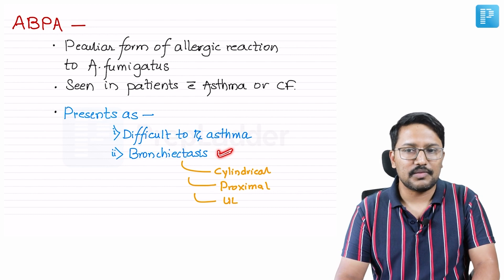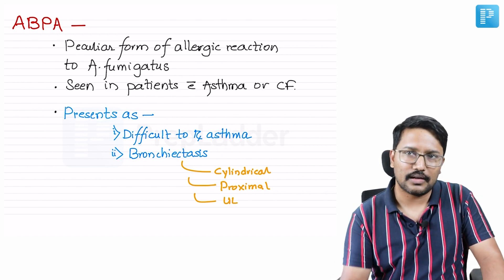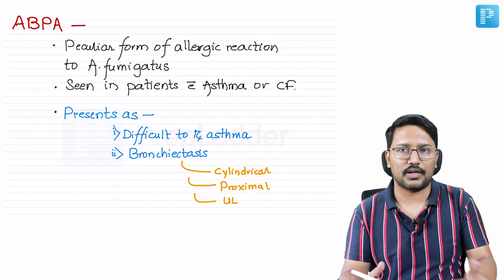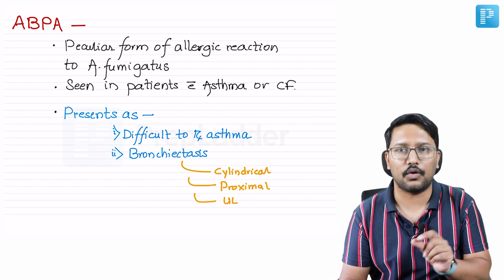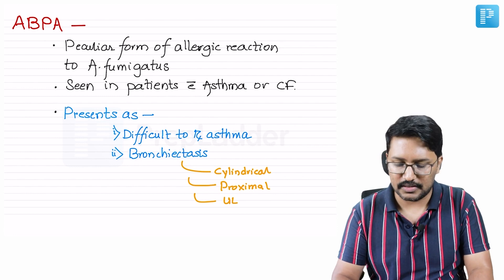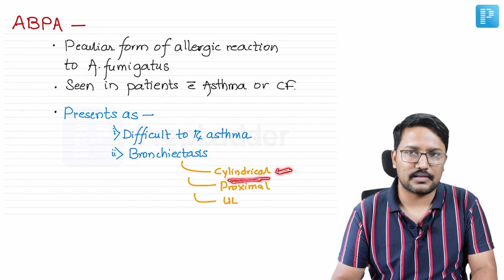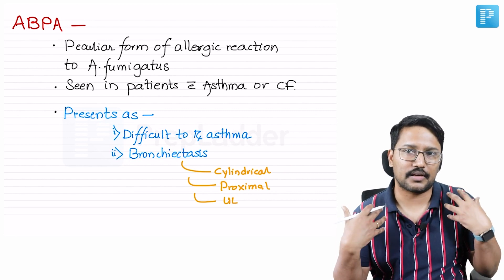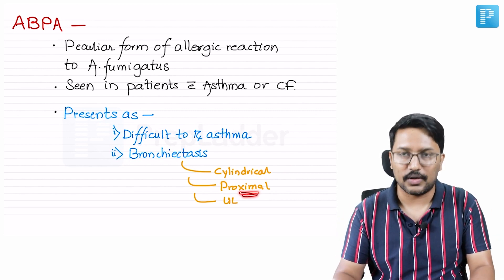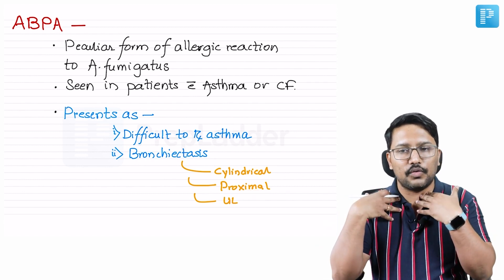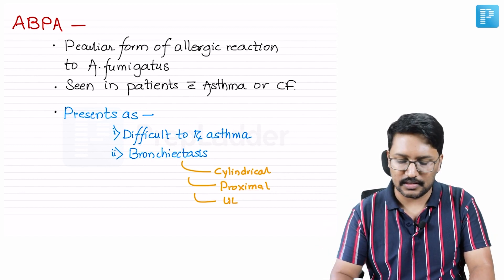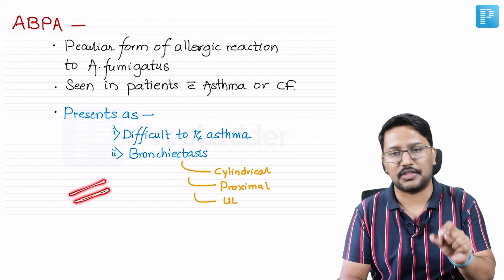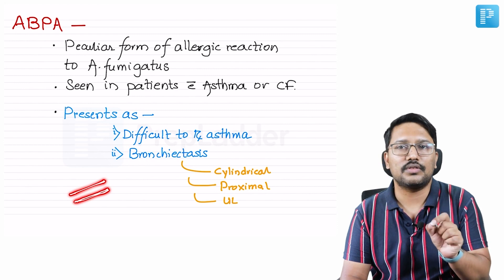If ABPA is chronically present, patients might develop bronchiectasis. The bronchiectasis seen in ABPA patients is usually cylindrical — bronchiectasis is classified into cylindrical, fusiform, and cystic. This cylindrical bronchiectasis is located more proximally, towards the hilum, and mostly affects the upper lobes. In cylindrical bronchiectasis, the bronchial tree is dilated but still maintains parallel structures, so it looks like a cylinder.